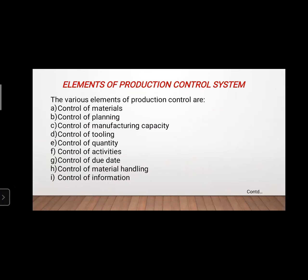In this class, we will start with the elements of the production control system. The various elements of production control are: control of materials, control of planning, control of manufacturing capacity, control of tooling, control of quantity, control of activities, control of due date, control of material handling, and control of information.